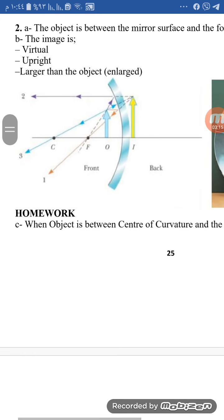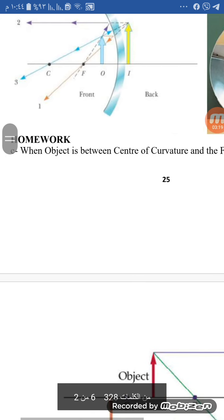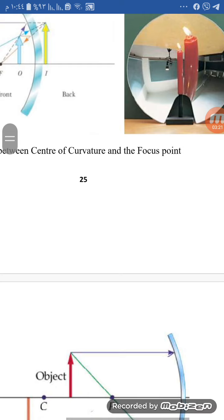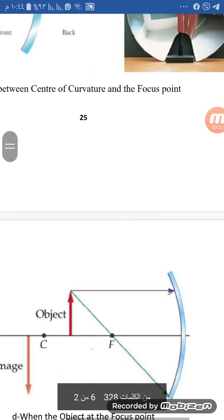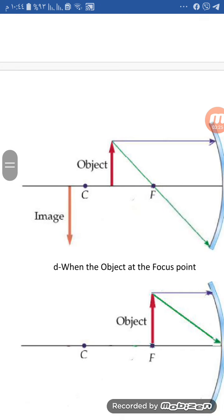Now we are going to have a homework problem: if the object is between the center of curvature and the focal point, from the figure we can see that the image will be enlarged, inverted, and real.